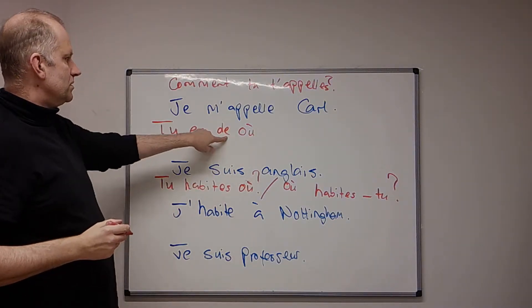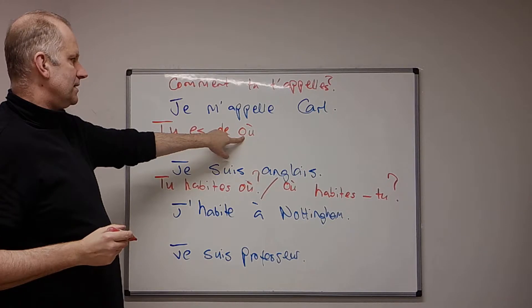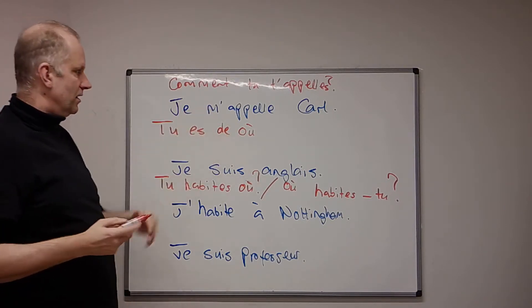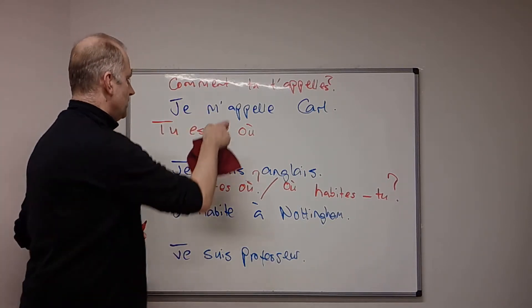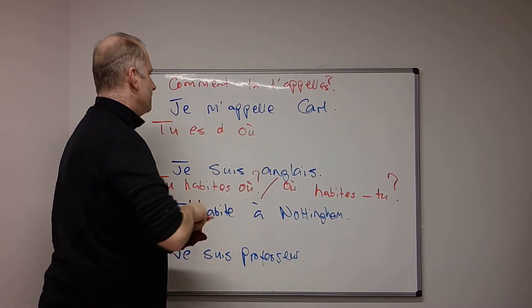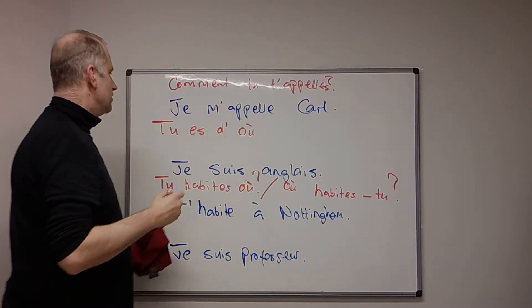But when you've got de ending in an e, and où ending with an o, you don't want them to bounce together. So, to avoid that, what we can do is get rid of the e, and tu es d'où, you're from where.